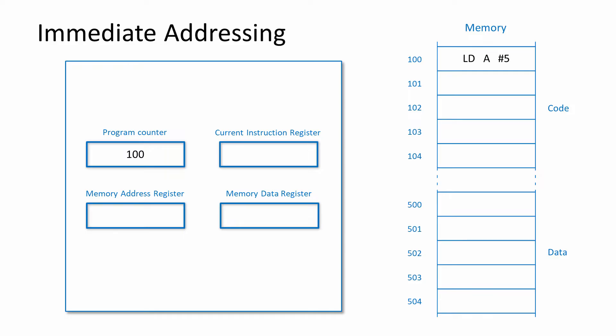It's the hash symbol in front of the 5 that indicates it should be interpreted as a hard-coded value. When the operand of an instruction is the actual value to be operated on, this is known as immediate addressing. To fetch the instruction, the address in the program counter is copied to the memory address register, then the instruction is copied from memory into the current instruction register via the memory data register. The program counter is incremented after the fetch. The important point is that once the processor has fetched this instruction, the data it needs to work with is available immediately — the processor won't need to go back to memory again.